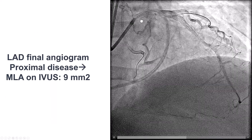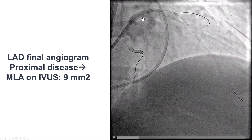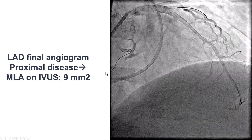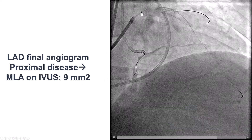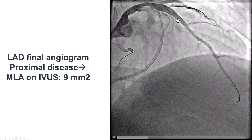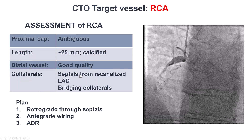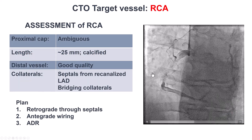There was some disease in the more proximal segment of the LAD; however, by IVUS the minimum lumen area was 9 mm², so we did not think additional PCI of the LAD was needed. We had used only about 70 mL of contrast and less than one gray of radiation, so we decided to proceed with PCI of the RCA CTO.